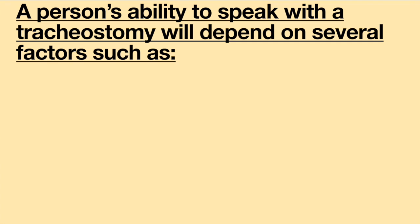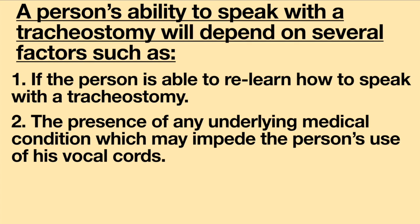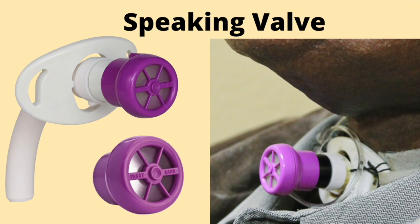Individuals with tracheostomies may or may not be able to speak. With a tracheostomy, the vocal cords are left intact. However, a person's ability to speak will depend on several factors, such as whether the person is able to relearn how to speak with a tracheostomy, the presence of any underlying medical condition which may impede the person's use of his vocal cords, and injury to the nerves and muscles needed to produce speech. Some people with tracheostomies use a device called a speaking valve to produce speech.